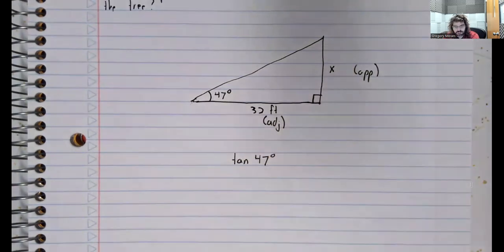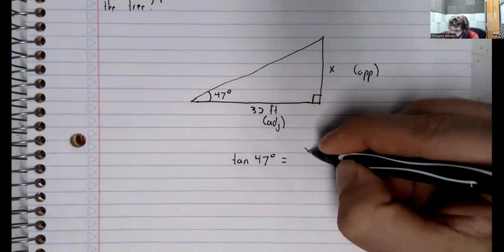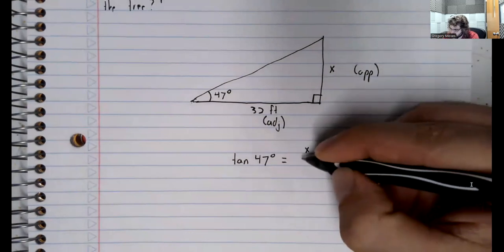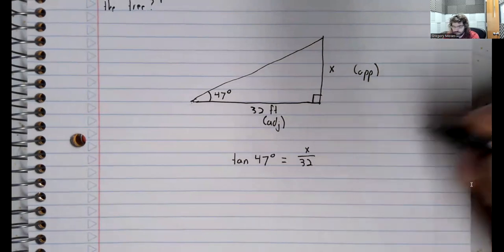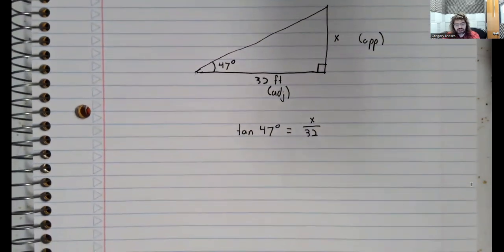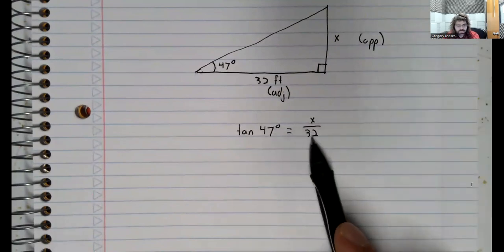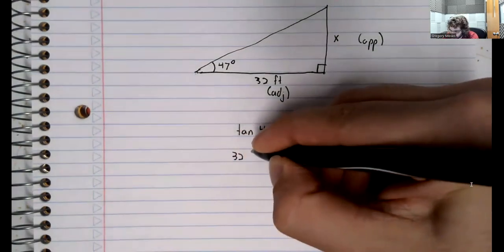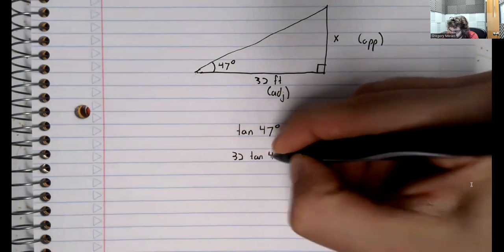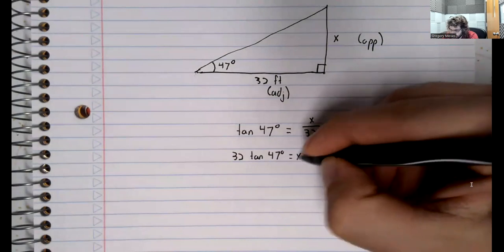So we have tangent of 47 degrees equals x over 32. Let's multiply both sides of this equality by 32. And here's x.